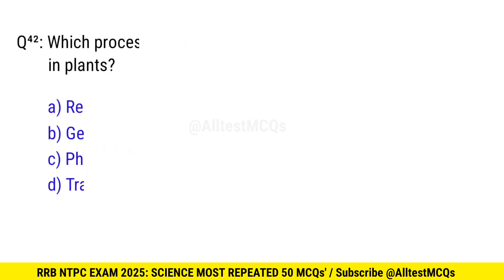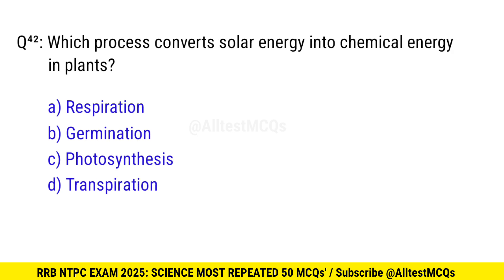Question 42. Which process converts solar energy into chemical energy in plants? Right option is C, photosynthesis.